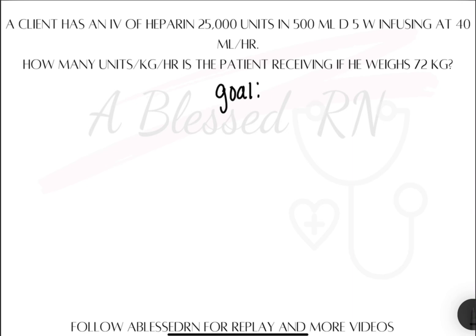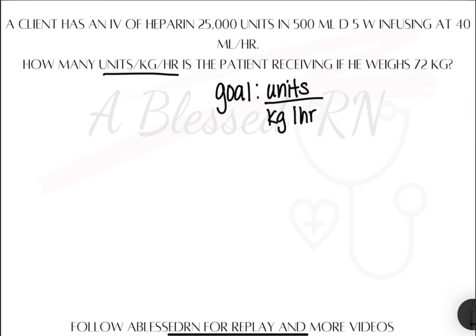So what is the goal? That's the picture on the puzzle box — that's what the question is asking us: units per kilogram per hour. So units will go on top, kilograms and hour will go on the bottom. That's what we want our equation to look like once we get done canceling all of our units.